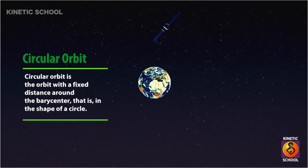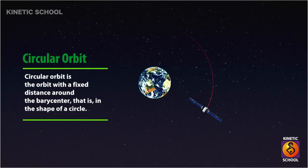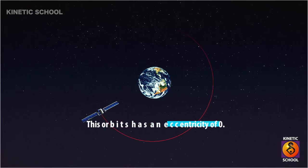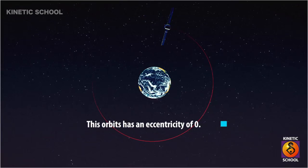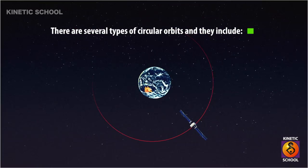A circular orbit is the orbit with a fixed distance around the barycenter, that is, in the shape of a circle. This orbit has an eccentricity of zero. There are several types of circular orbits, and they include geostationary orbit, polar orbit, and equatorial orbit.